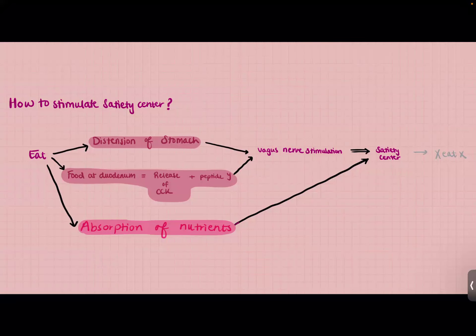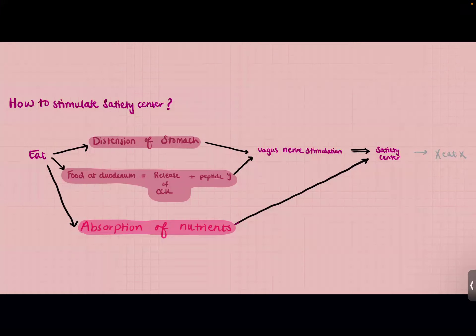We've talked about the effects of stimulating the satiety center — the place in our brain that tells us we're full. But how do we actually stimulate it to let it know we have eaten? The first way is when we eat, our stomach expands and distends. This stretching stimulates stretch receptors in the walls of our stomach, and these signals get transmitted by the vagus nerve to go to the satiety center. That's the first way: gastric distension.